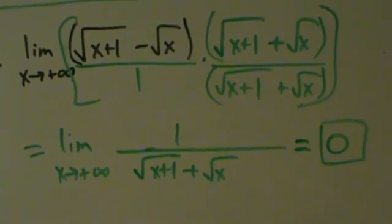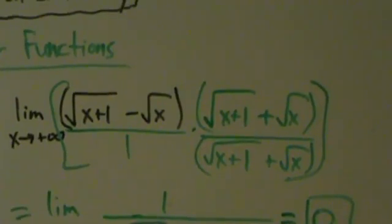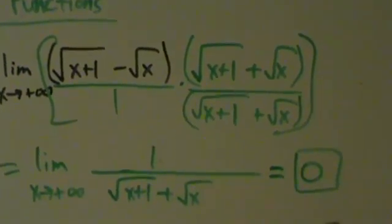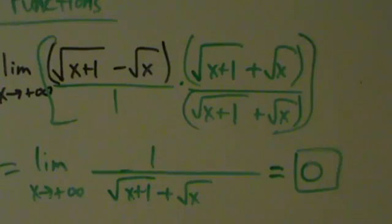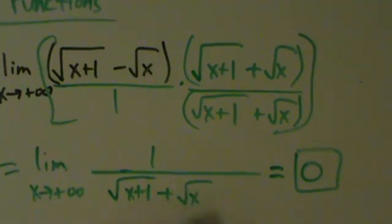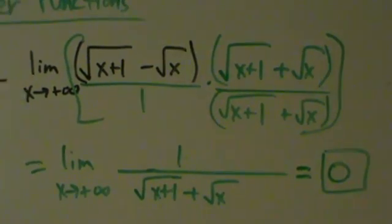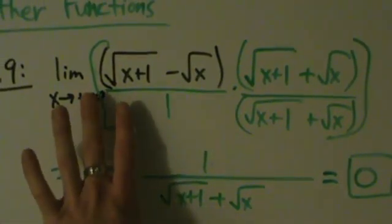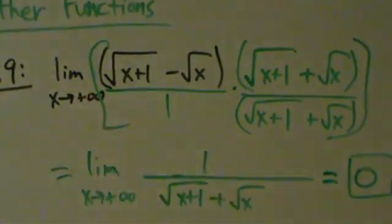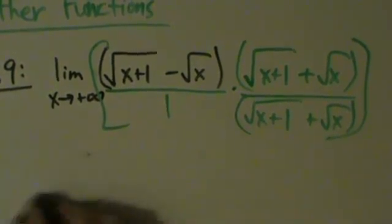Now you might be thinking — didn't you say this isn't 0? What I said was infinity minus infinity is not necessarily 0. It might be 0, it might be a different number, it might be infinity or even negative infinity — we just have no idea. So if you end up with infinity minus infinity, you've got to be really careful. It won't always be 0, so let's see an example where it turns out to be something else.